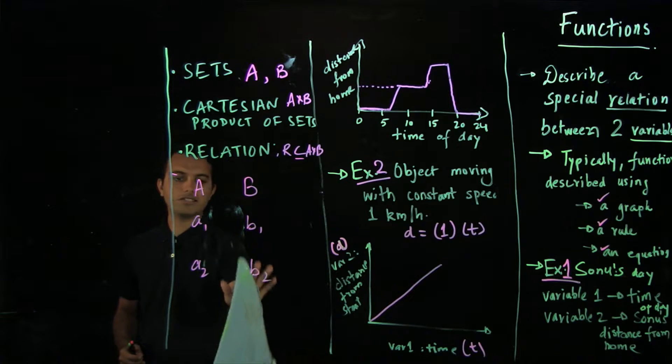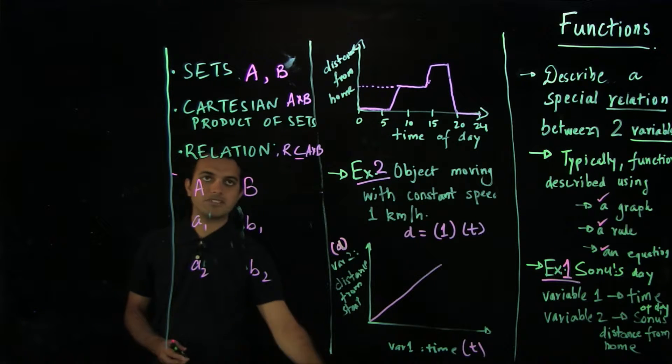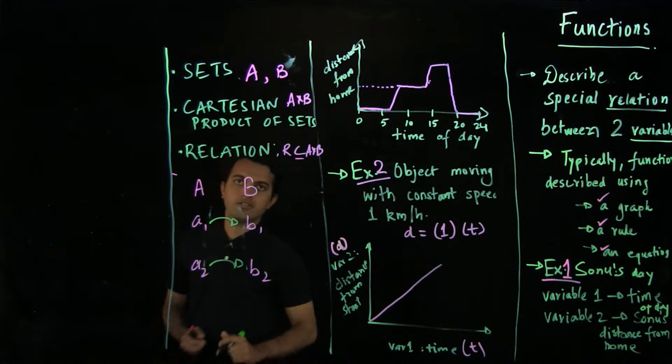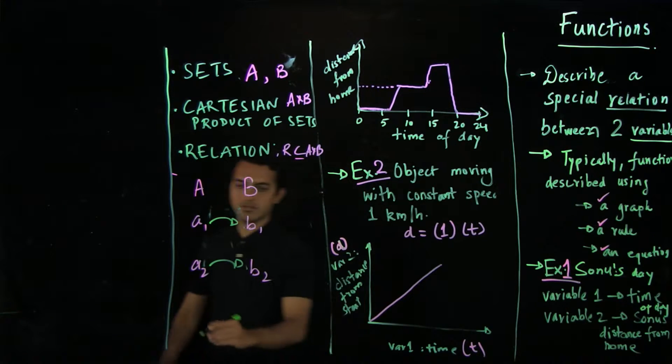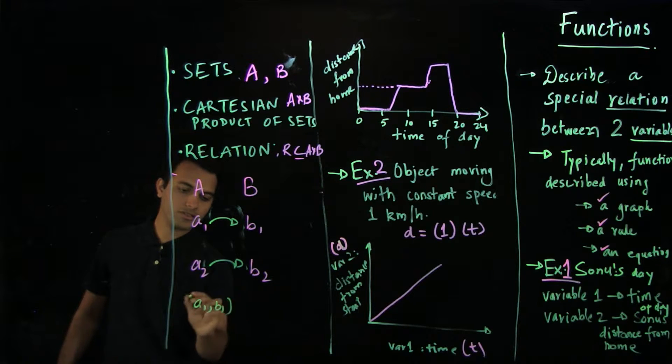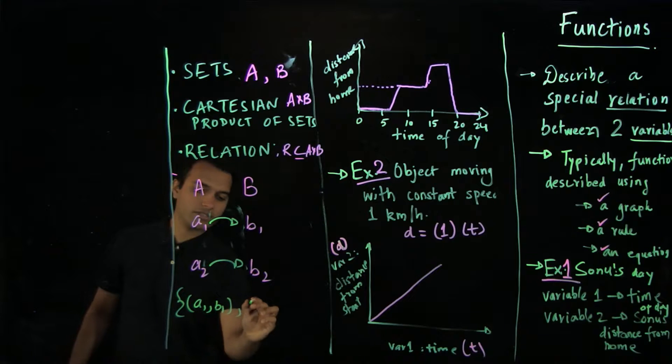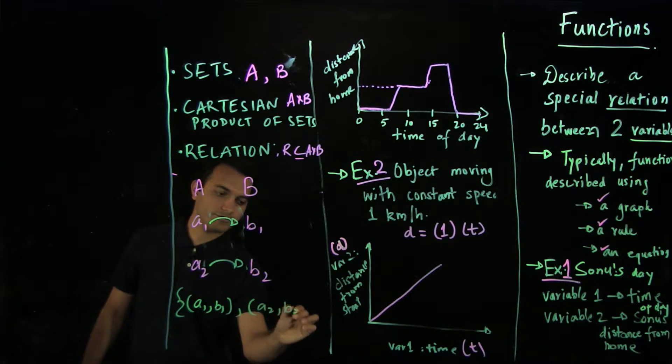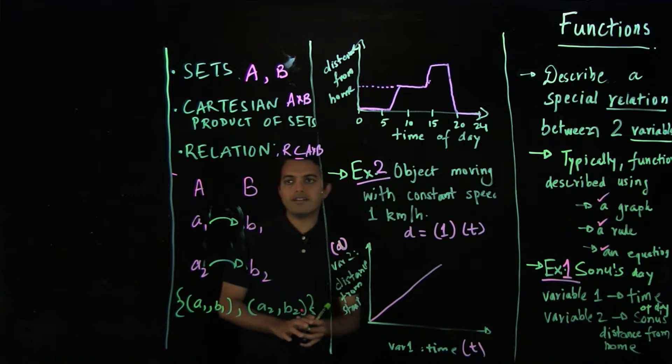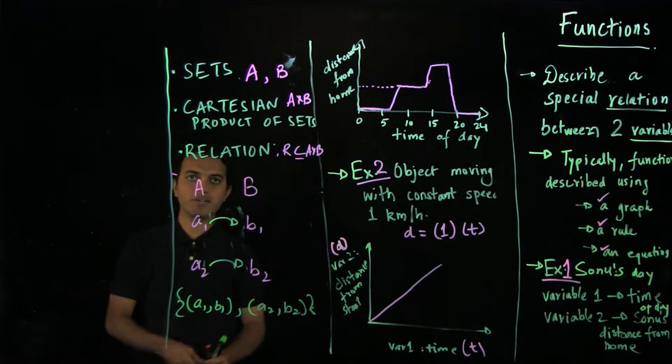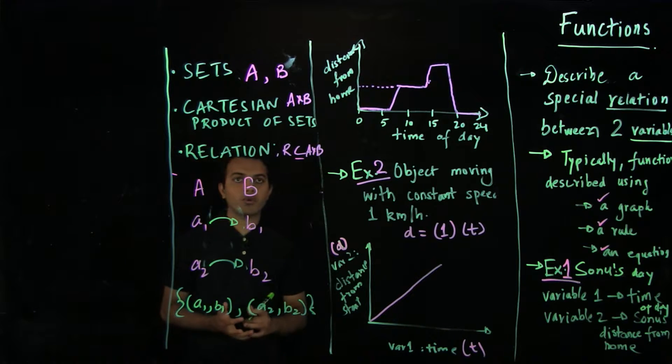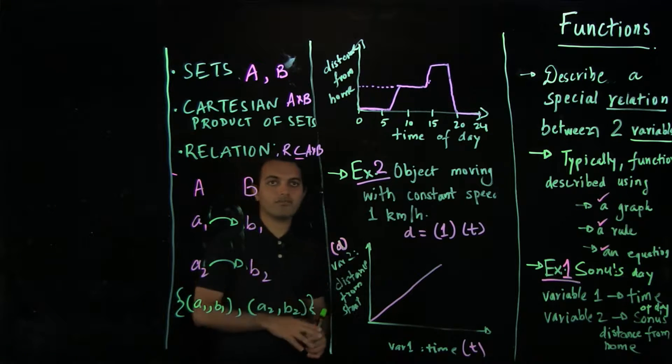So let us consider a specific relation where we have a1 comma b1 and a2 comma b2. So this is one set. So our relation has two elements, a1 comma b1. This is the first element and the second element is a2 comma b2. So now, relation between two variables is defined by these ordered pairs. Now, we will try to find out what is it that makes this a function.